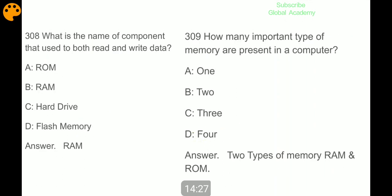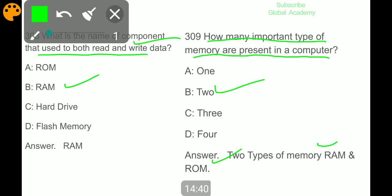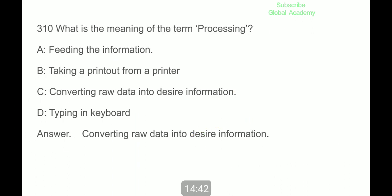What is the name of component that is used to both read and write data? RAM. How many important types of memory are present in a computer? Two types of memories: RAM and ROM. What is the meaning of the term processing? Processing means converting raw data into desired information.